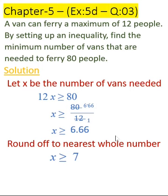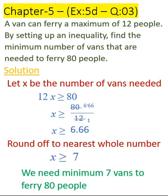So the answer will be x is greater than or equal to 7. That means we need at least 7 or more than 7 vans to ferry 80 people. The answer is we need minimum 7 vans to ferry 80 people.